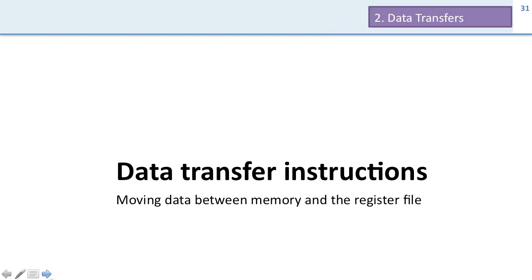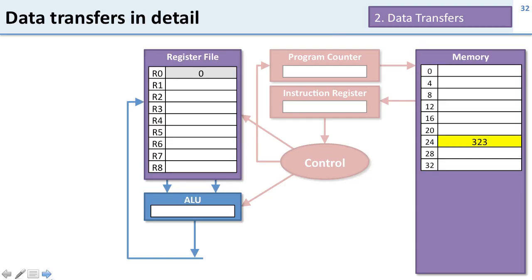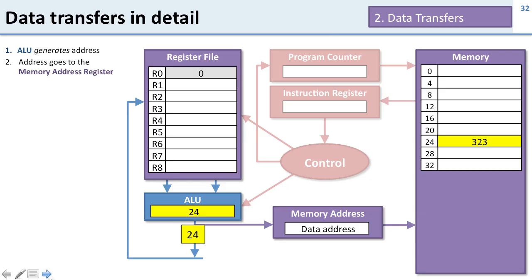We're going to talk about data transfer instructions — instructions that allow us to move data between the memory and the register file. In order to do that we're going to have to add some more stuff to our processor. The ALU is going to generate our address, but we need a place to put that address so we can get it to the memory. So we're going to add a memory address register, which is where that address can go so we can get ready to send it off to the memory.